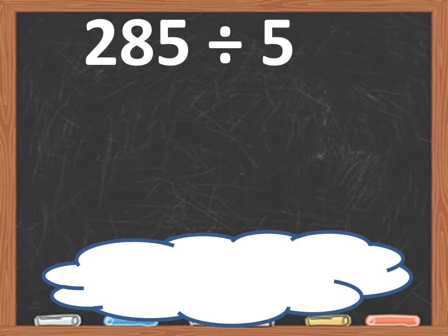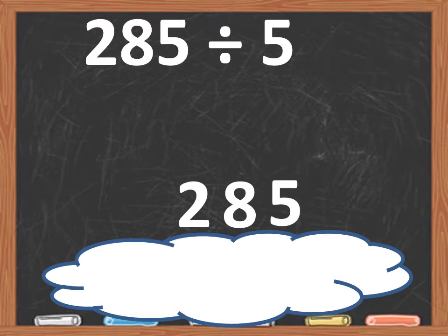The division problem is 285 divided by 5. 285 being our dividend and 5 being our divisor. Now let's take a look at 285, one digit at a time.